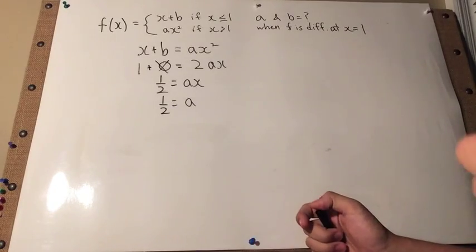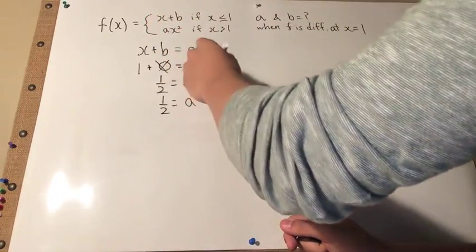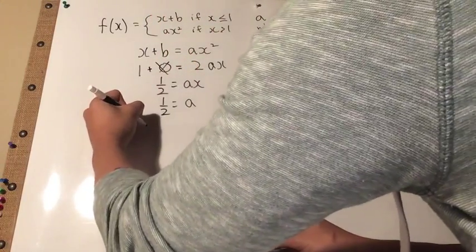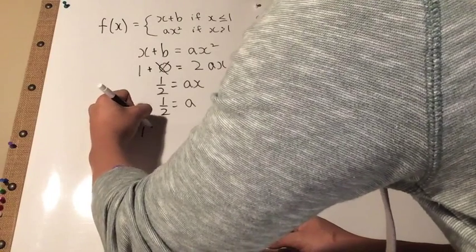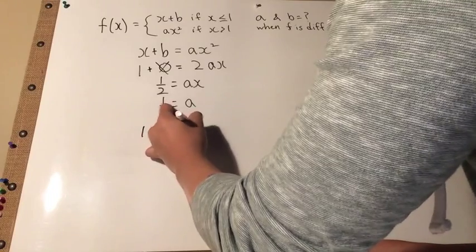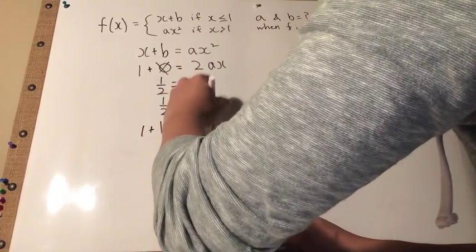After you solve for that, you can plug this a back into the original equation, as well as the x. If you do so, it would be 1 plus b equals 1 half squared.